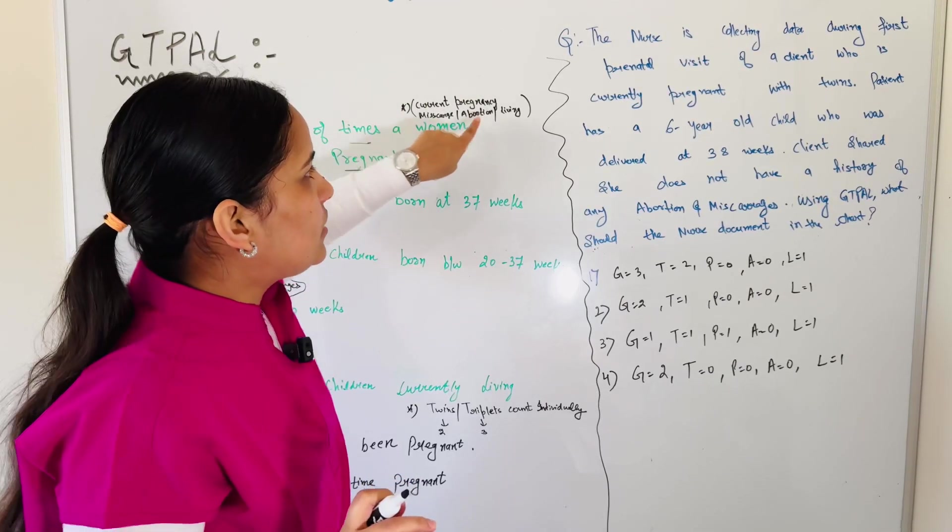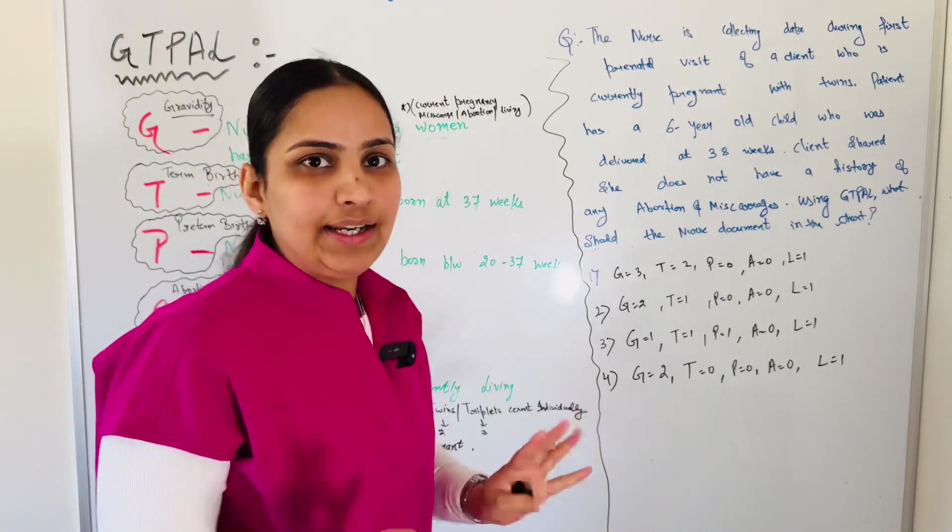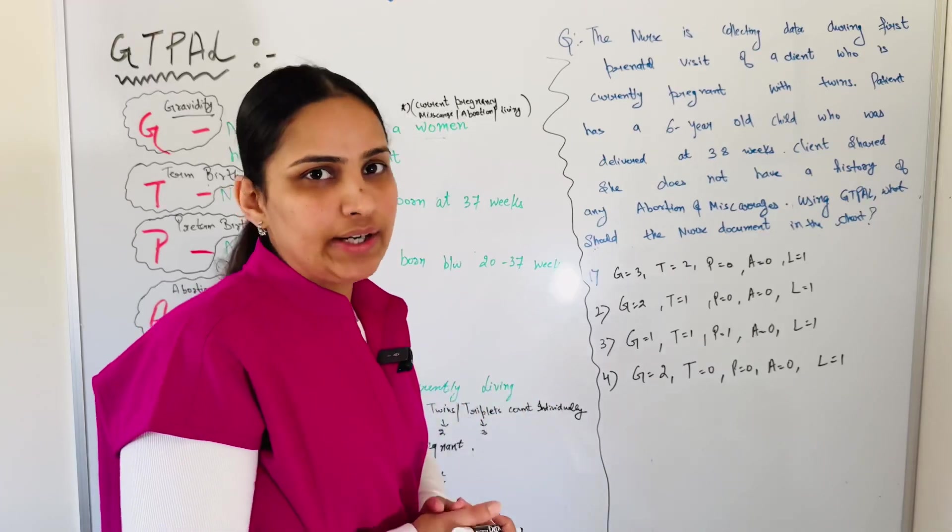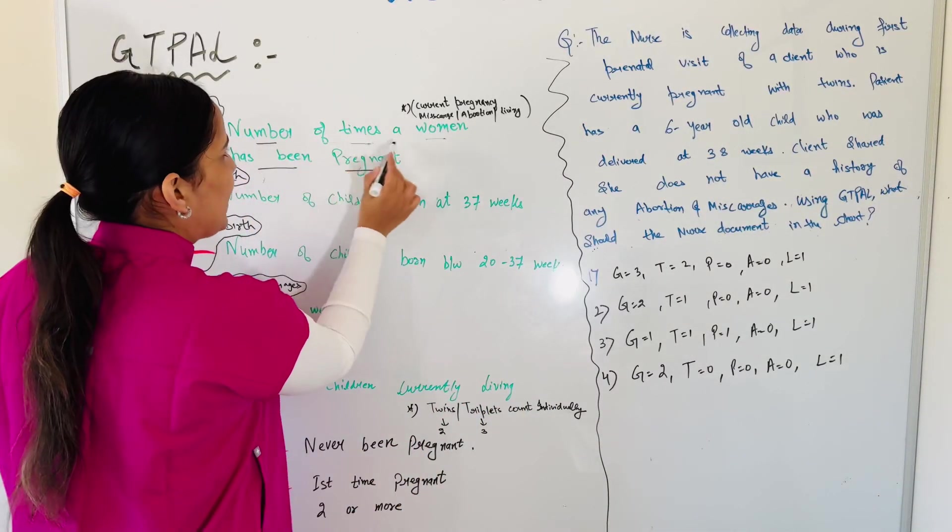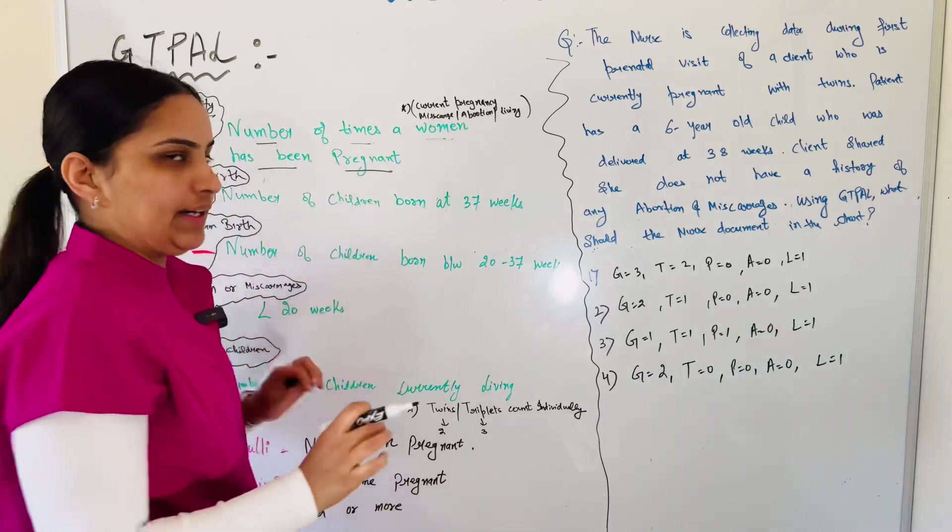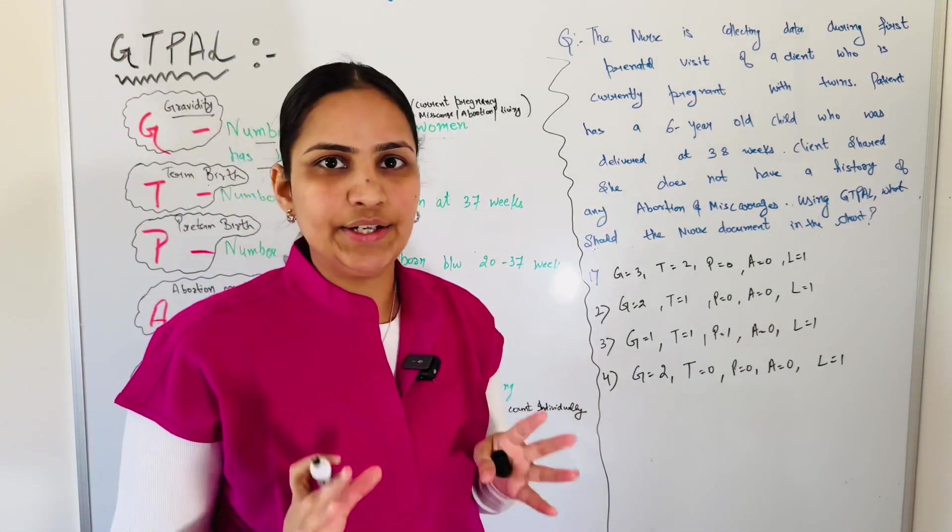If the woman is currently pregnant, we have to include that. Any miscarriages, abortions, and currently living. Everything will be included in this one. So remember, the key term is number of times a woman has been pregnant. Number of pregnancies in total.